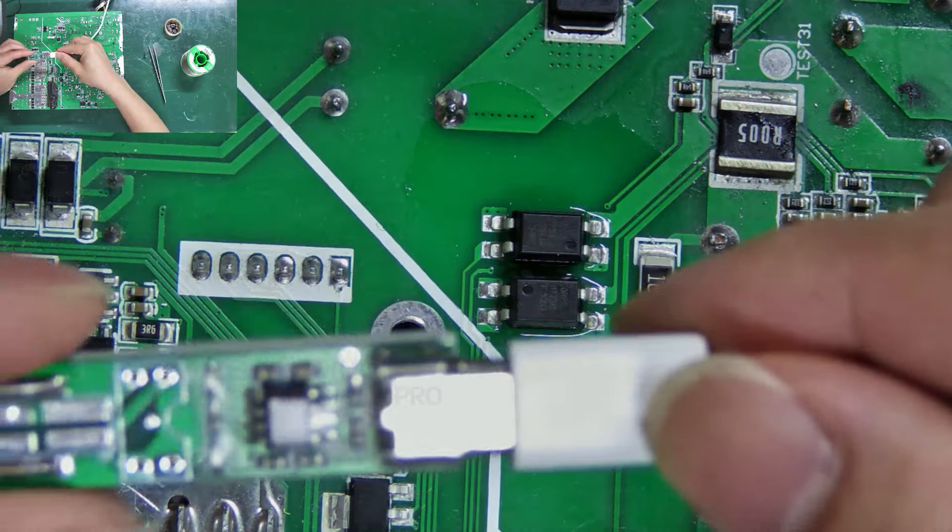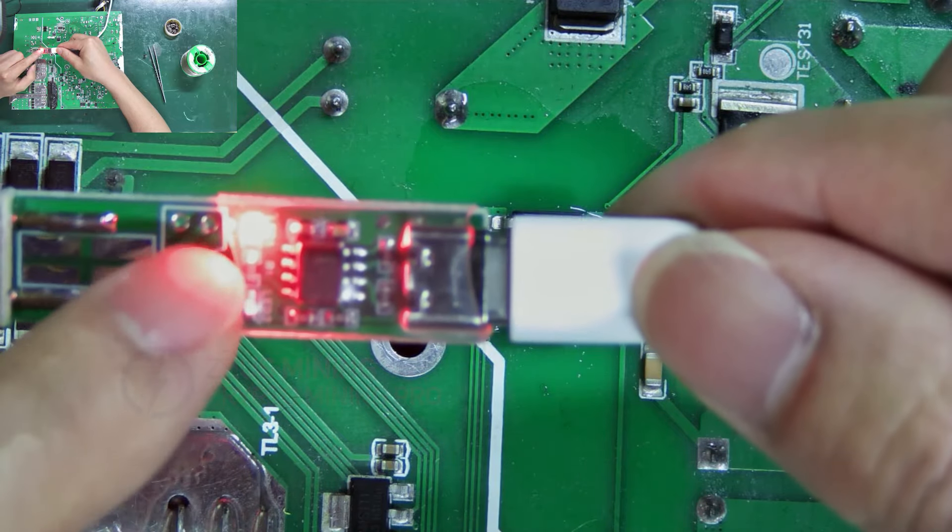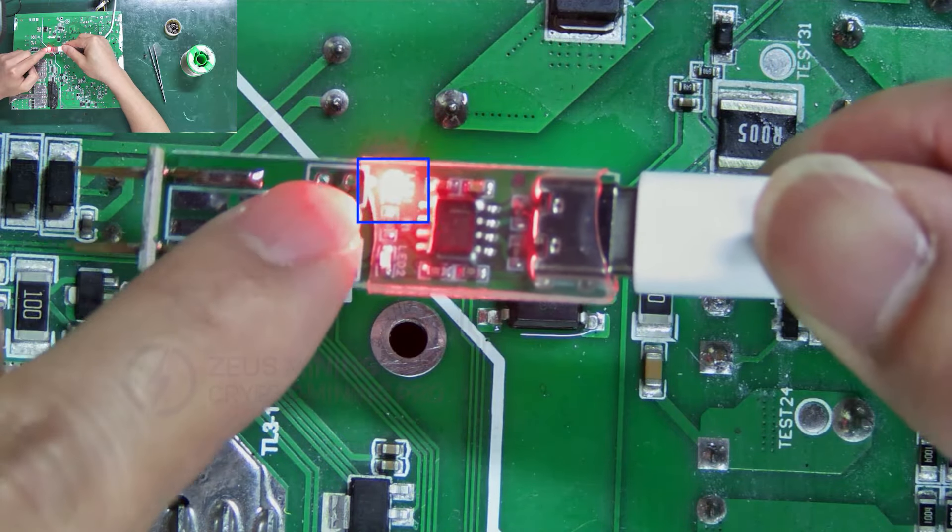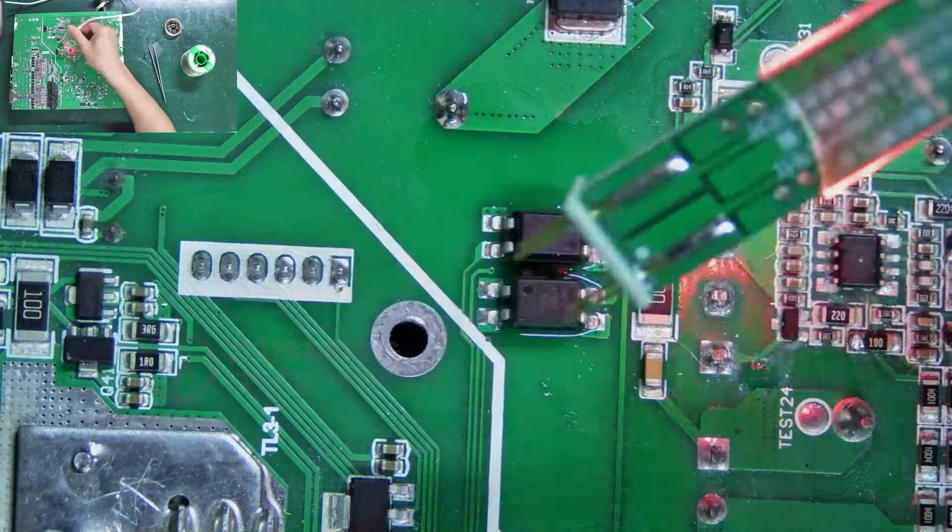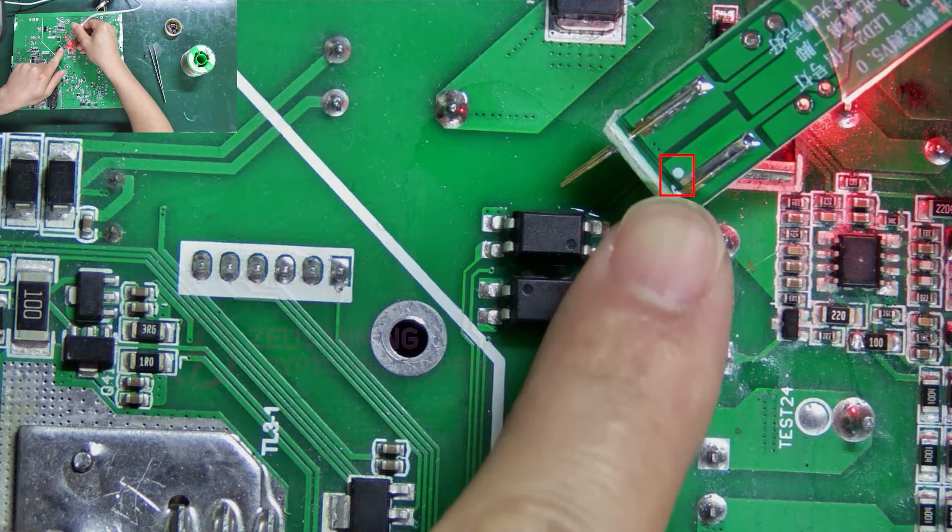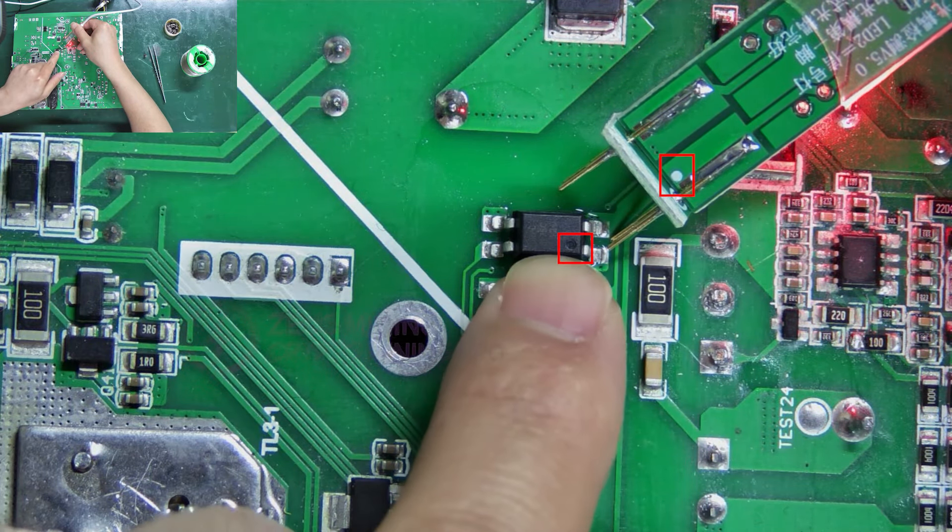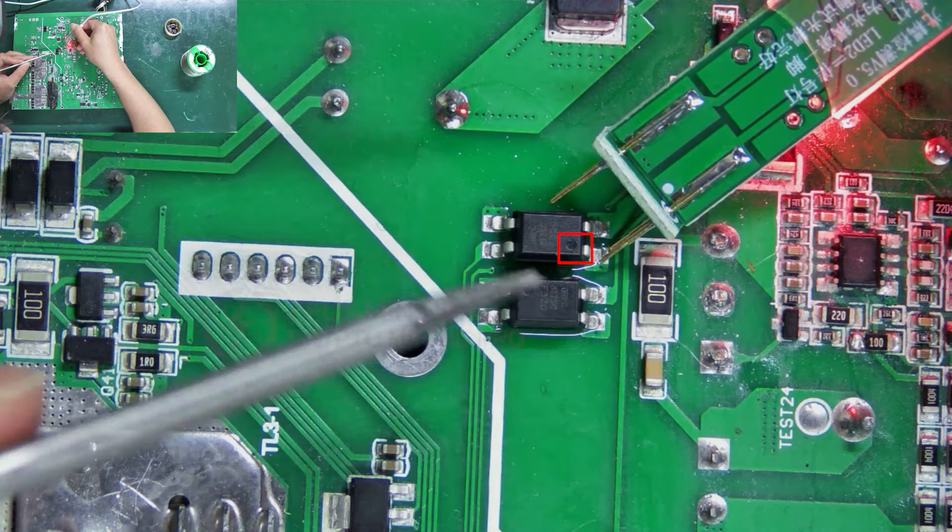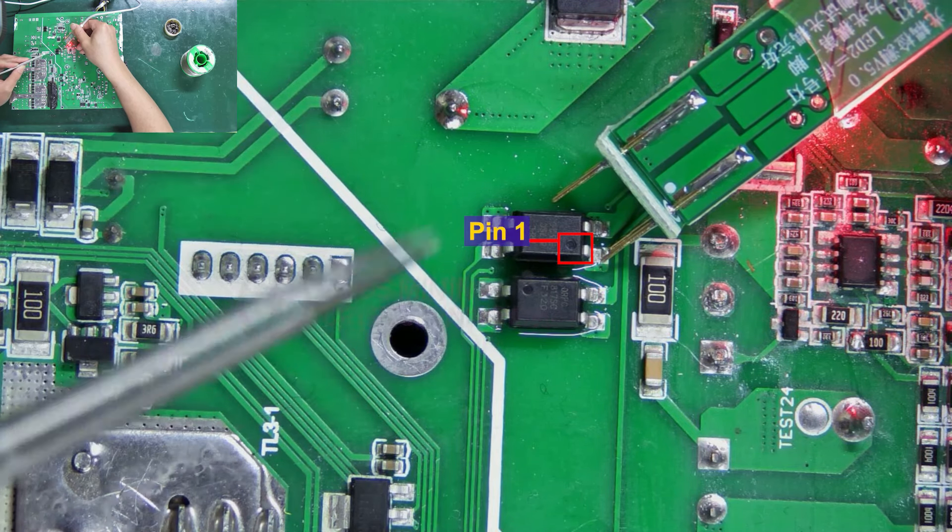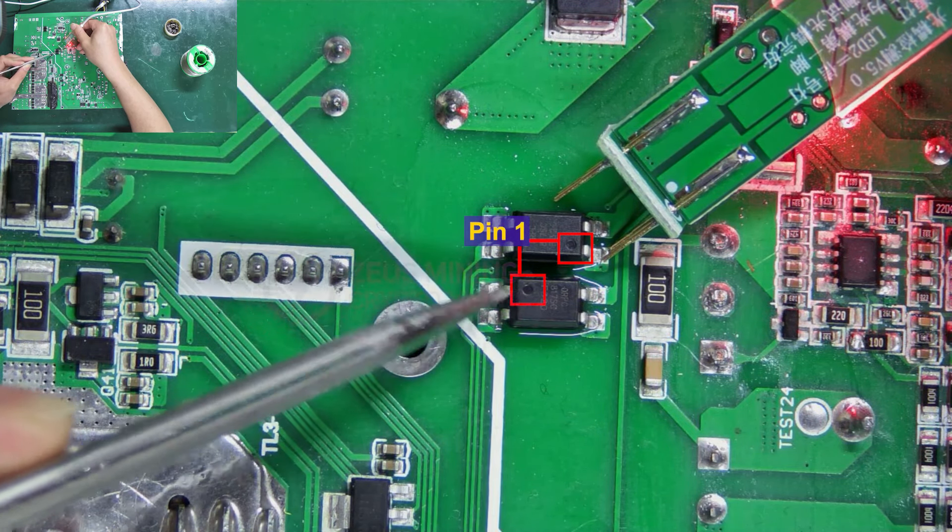Now, let's power it up. We can see LED 1 is on, indicating it's normal. During testing, their pin 1 must align correctly. The black dot on the optocoupler corresponds to pin 1. The same goes for this one.